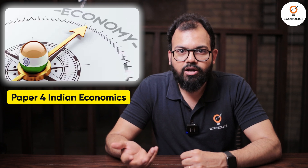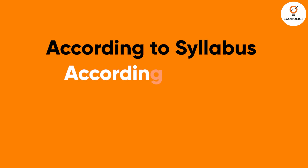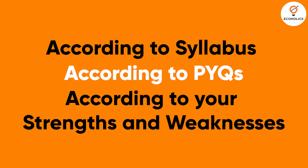For example, there are four papers of economics of 200 marks each. One paper is dominated by microeconomics — General Economics Paper One — and Paper Four is dominated by Indian economy. This means two subjects, micro and Indian economy, consist of approximately 40% of the total syllabus. If you give equal weightage to all topics, you will struggle to qualify. Always allocate time and effort according to the syllabus, the PYQ, and your own strengths and weak areas.